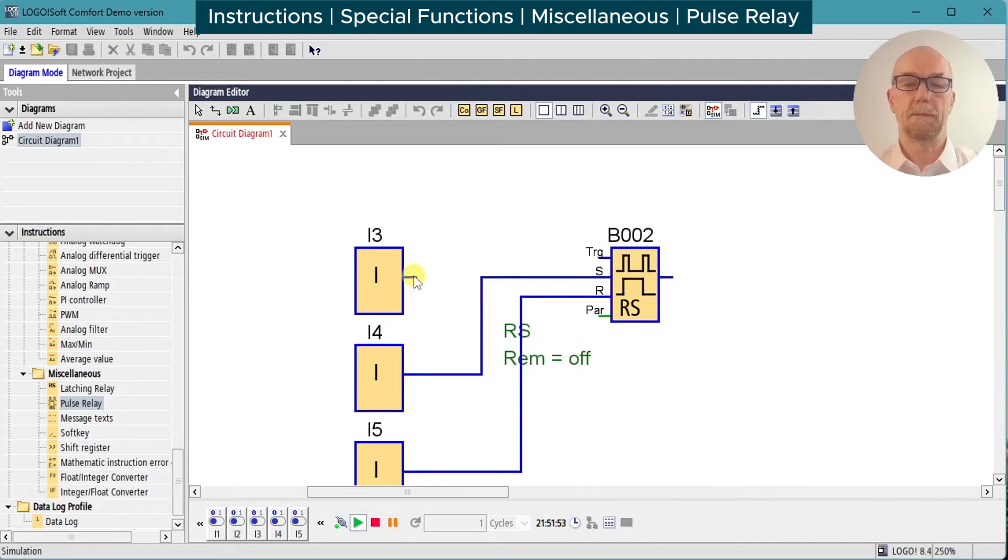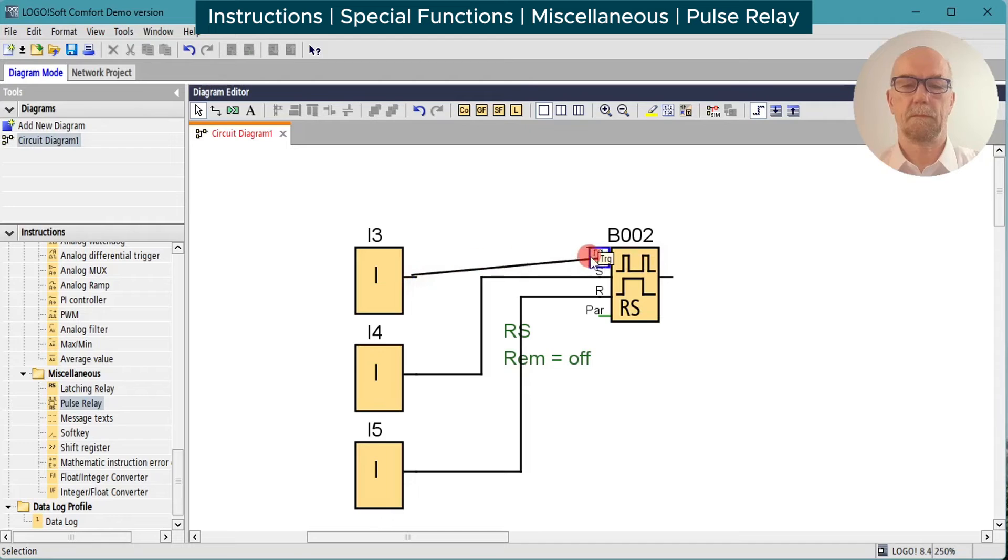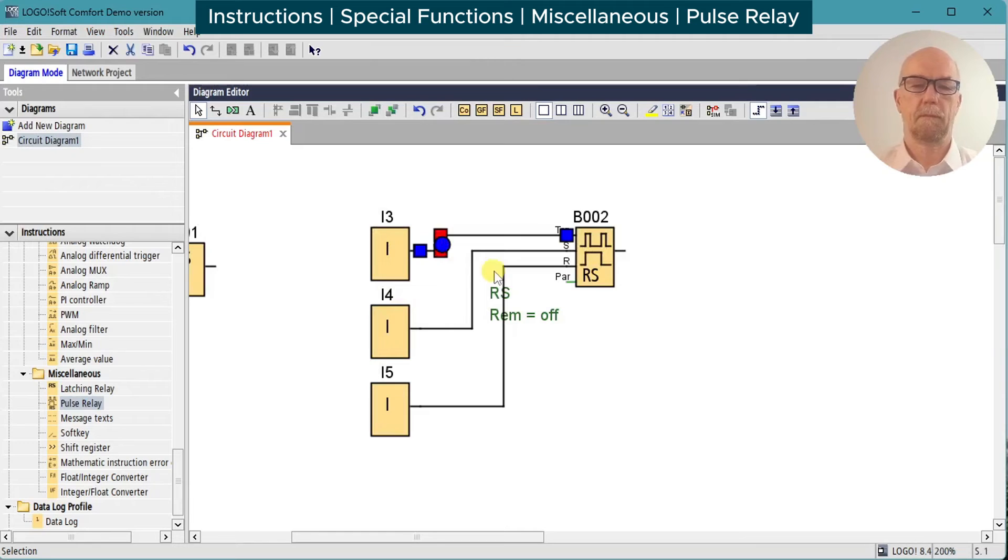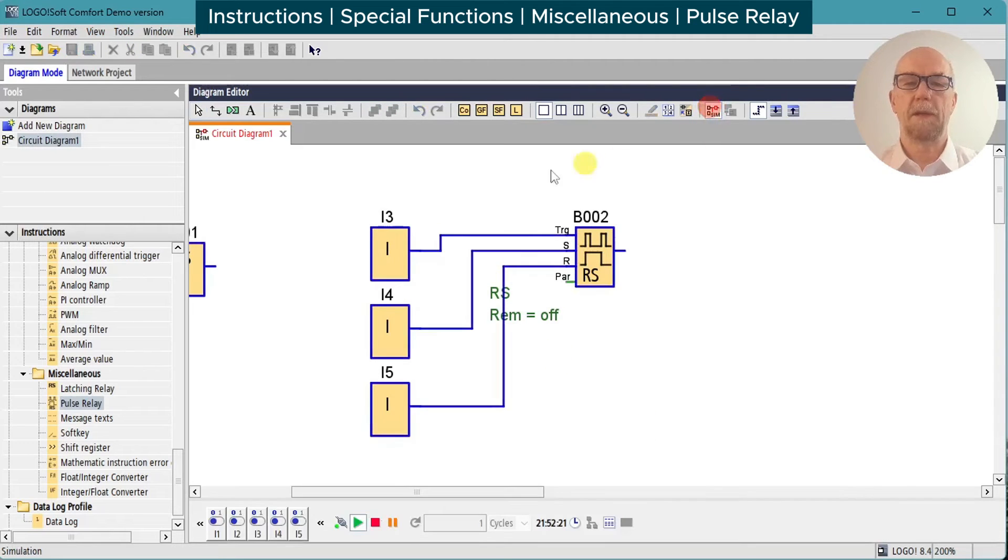We'll wire up and power up the simulator. Turn the trigger on - the function block turns on. Turn the input off - the function block remains on. We're at this point here in the cycle. Turn it on again - output turns off. Turn off the trigger again - output remains off. So it alternates on every rising edge of the trigger input.